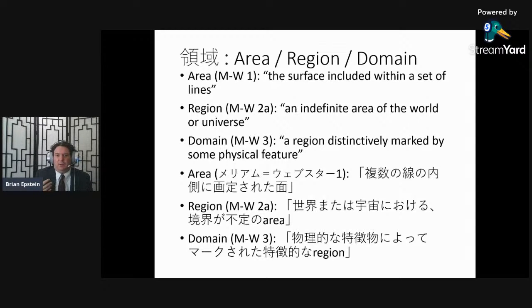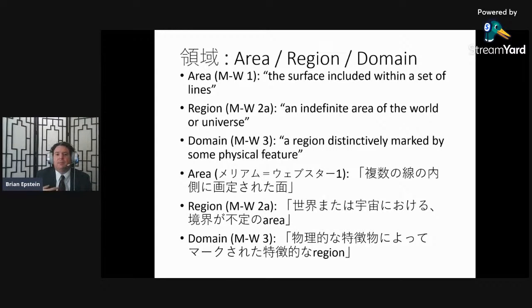For yoiki, the relevant definition of 'area' is the first: the surface included within a set of lines. For 'region,' we're using definition 2a — an indefinite area of the world or universe — which is the most pertinent to patent claims. For 'domain,' definition 3 applies: a region distinctively marked by some physical feature.